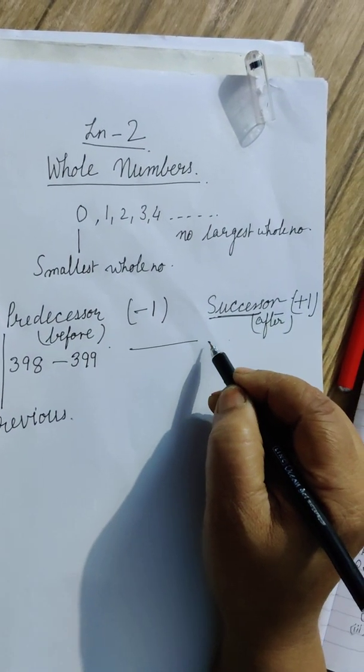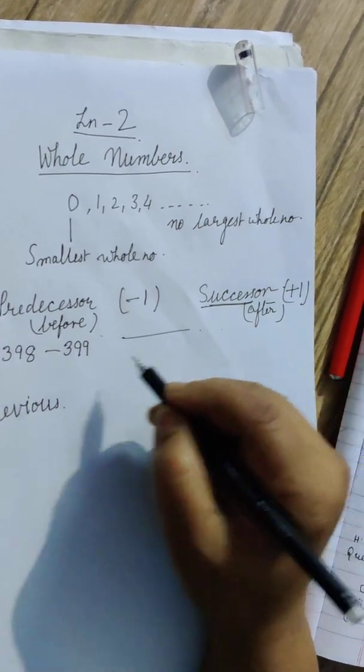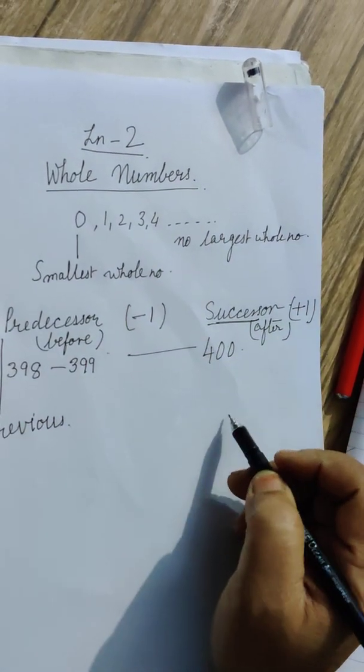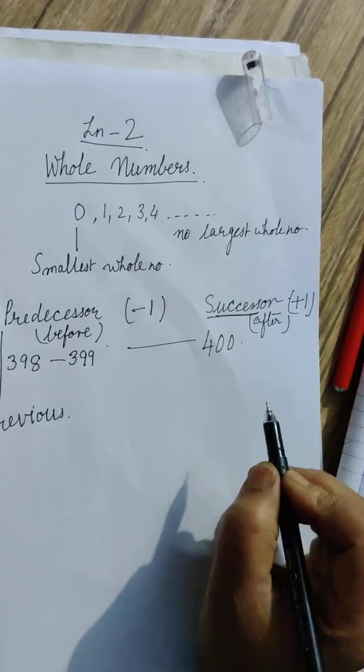That means after means going ahead. So one number after 399, that is 400. And that is called successor of that number.